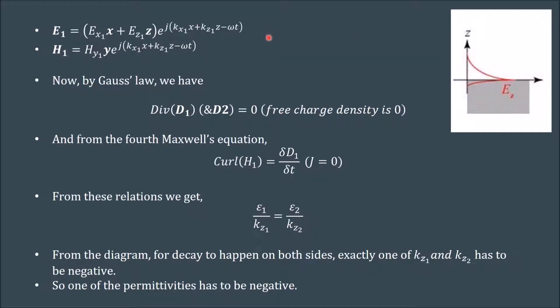Now coming to the general equations governing the working of surface plasmons, we have the general expression for E1 and H1. By Gauss's law we have the divergence of D1 and D2, the displacement vectors on both mediums equal to zero since the free charge density is zero. From the fourth Maxwell's equation, the curl of H1 is equal to the partial derivative of displacement vector on medium 1, and this is implied for both the mediums since the current density is taken as zero. From this relation, we have the relation between the two permittivities of both mediums as ε1 by kz1 equal to ε2 by kz2. Since the electric field decays exponentially in both mediums, we obtain that either kz1 or kz2 have to be negative. This also implies that either of the permittivities of the mediums have to be negative.